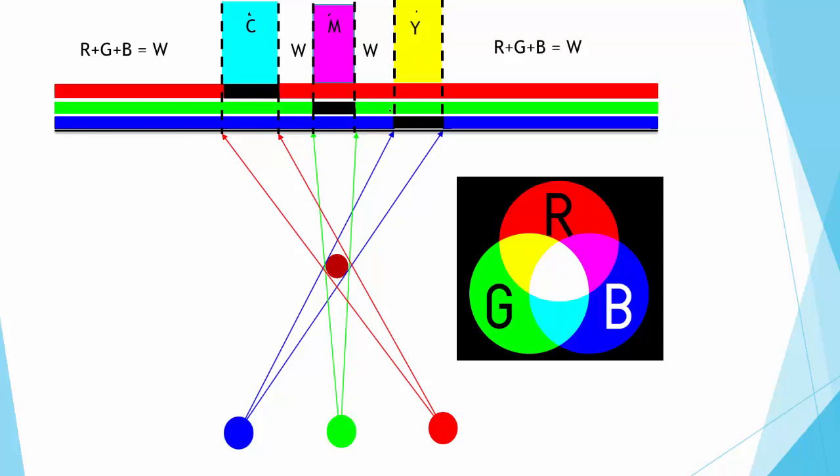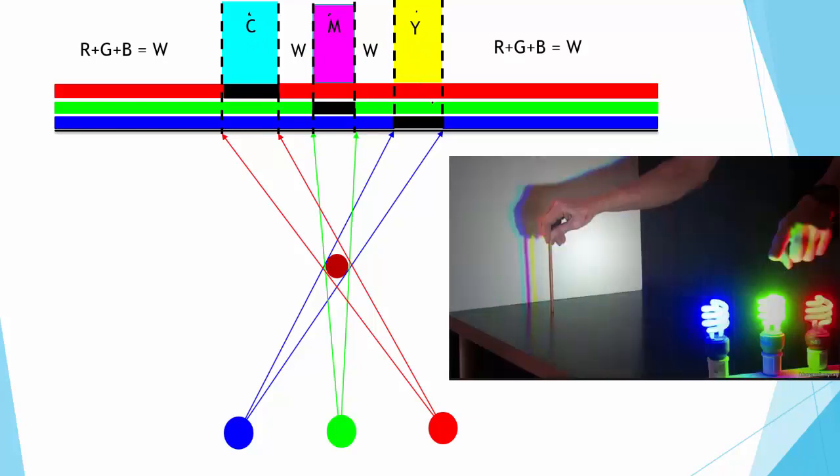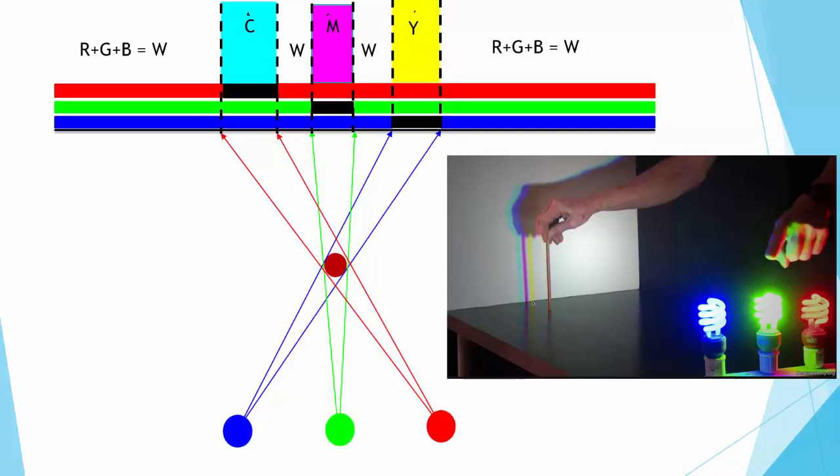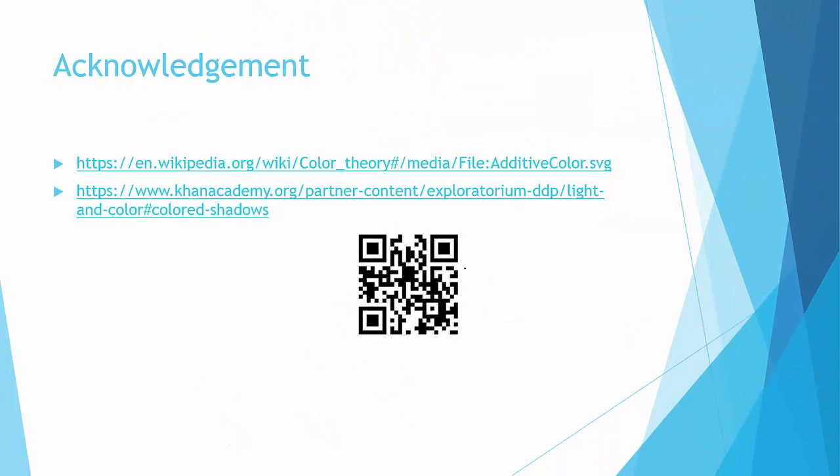This part doesn't have blue light but has red and green, so this will be yellow. Therefore it creates a shadow of cyan, magenta, and yellow, as shown in the picture over here. That's all for today.